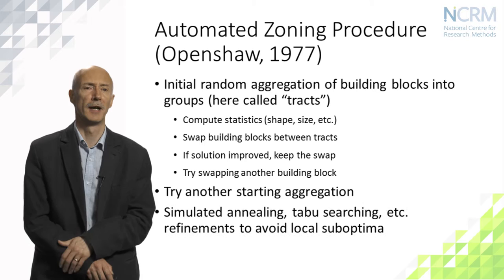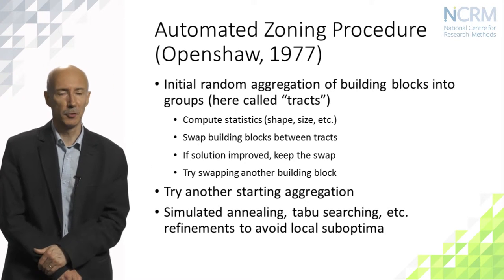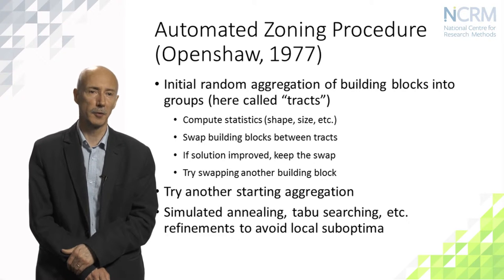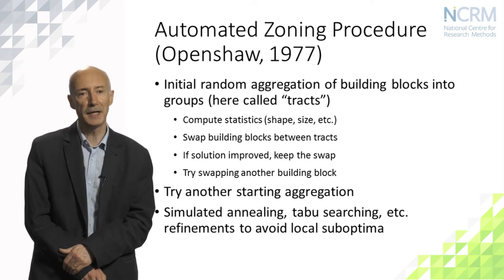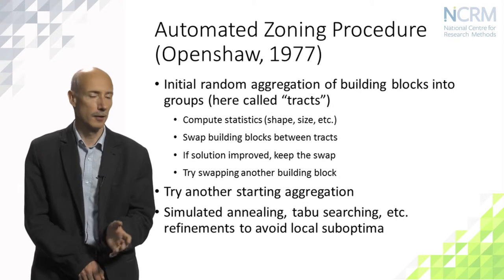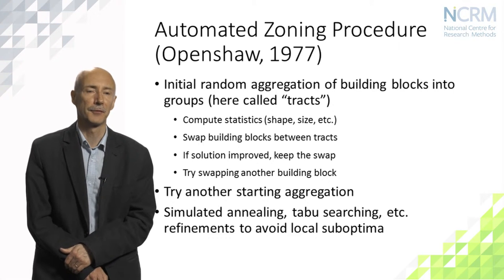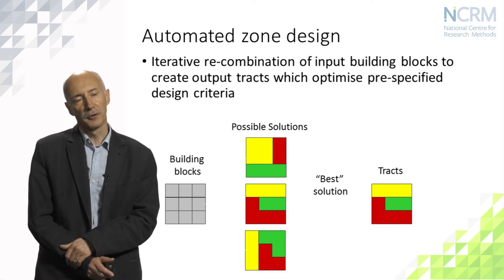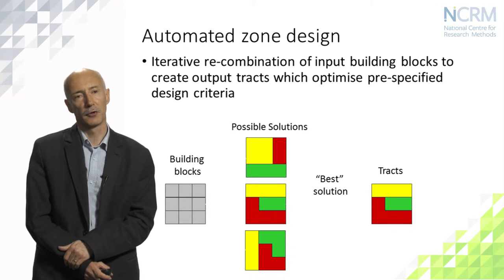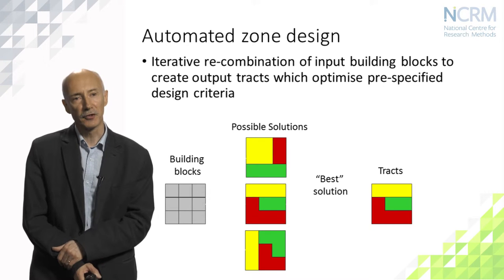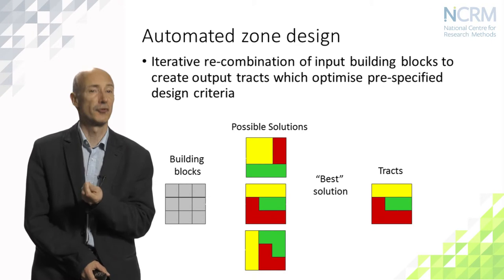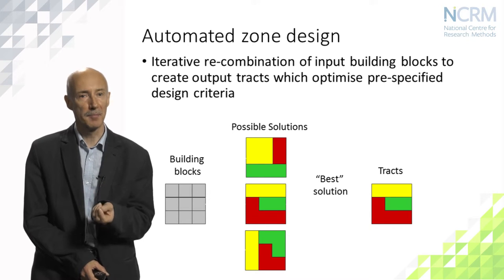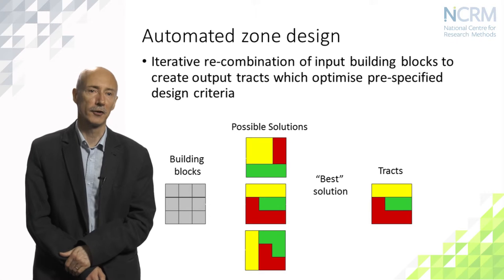If a swap clearly results in a poorer solution, we put it back and try a different swap. This iterative process tries very many small swaps, evaluating their effect and gradually building towards a more optimal solution. In computational terms, there are devices to stop these algorithms from getting stuck in local sub-optima, using methods such as simulated annealing or taboo searching. Diagrammatically, we take a set of small building blocks, evaluate possible solutions, and adopt the best to create the set of tracts.